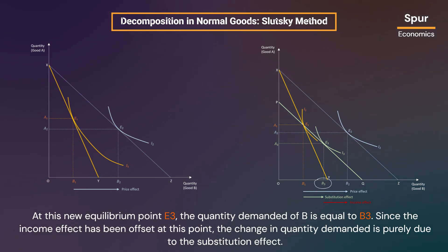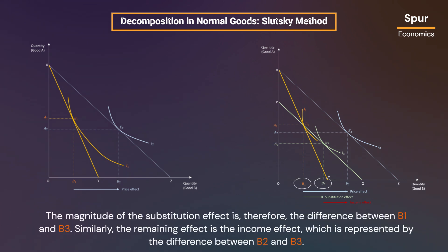At this new equilibrium point E3, the quantity demanded of B is equal to B3. Since the income effect has been offset at this point, the change in quantity demanded is purely due to the substitution effect. The magnitude of the substitution effect is therefore the difference between B1 and B3. Similarly, the remaining effect is the income effect, which is represented by the difference between B2 and B3.